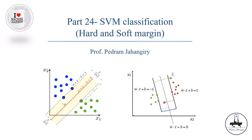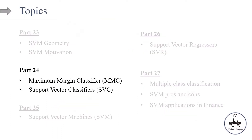Now let's talk about the hard and soft margin. In the previous episode, part 23, we covered some basic definitions for SVM — what a hyperplane is and how we can calculate the perpendicular distance from that hyperplane. We said the goal in SVM is to find the right hyperplane in either a regression or classification setup. In this episode, part 24, we're going to discuss how we can find the right hyperplane in the classification setup first, and later expand the idea for regression.